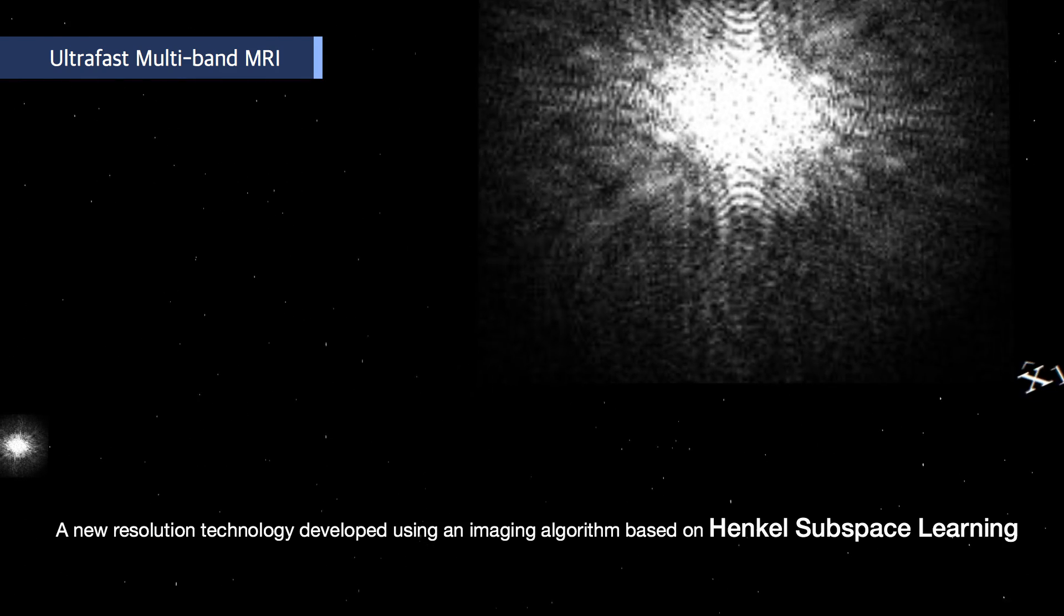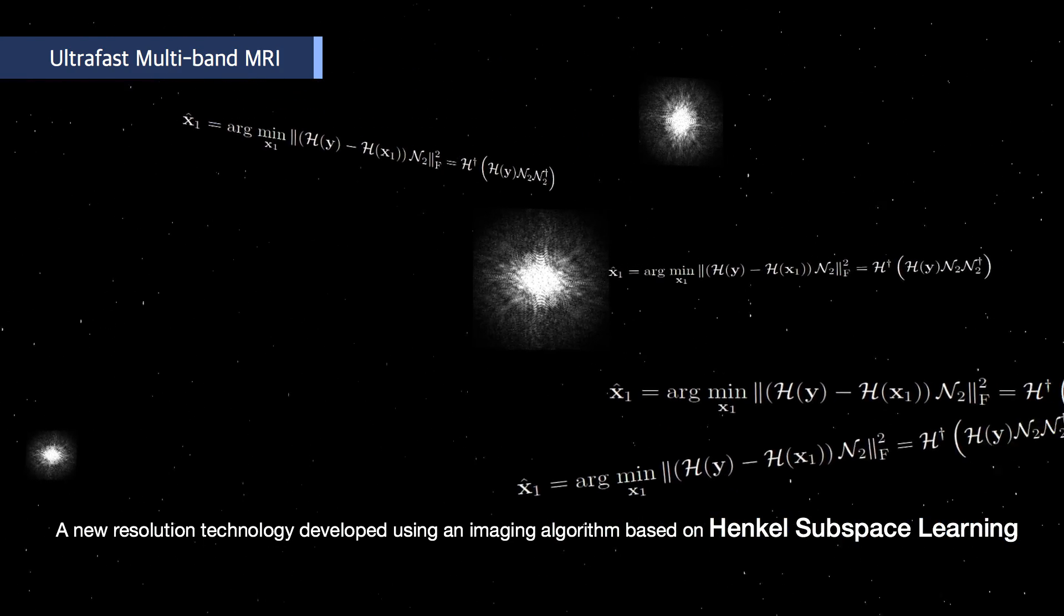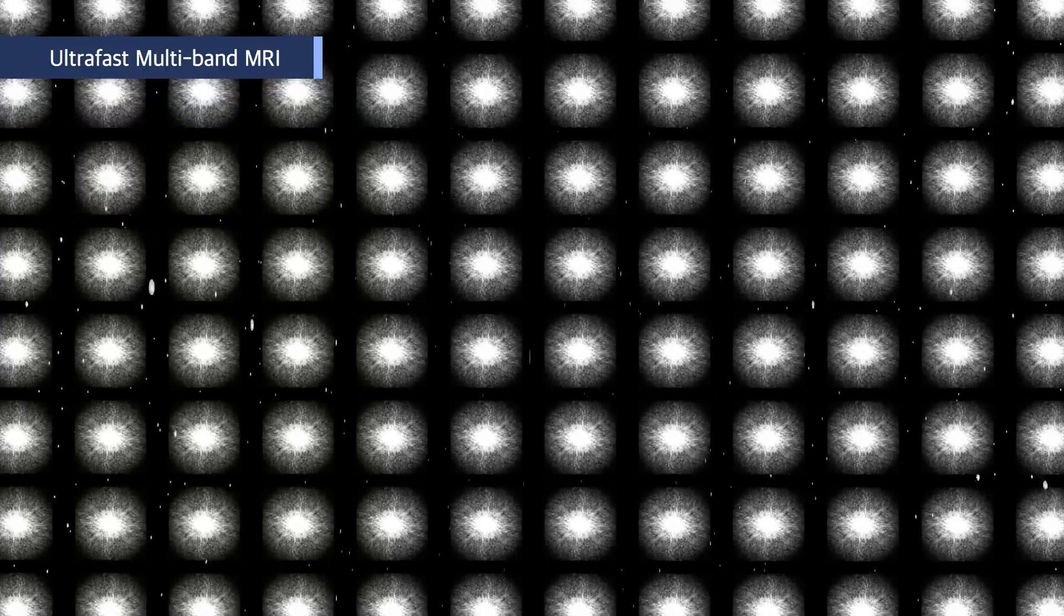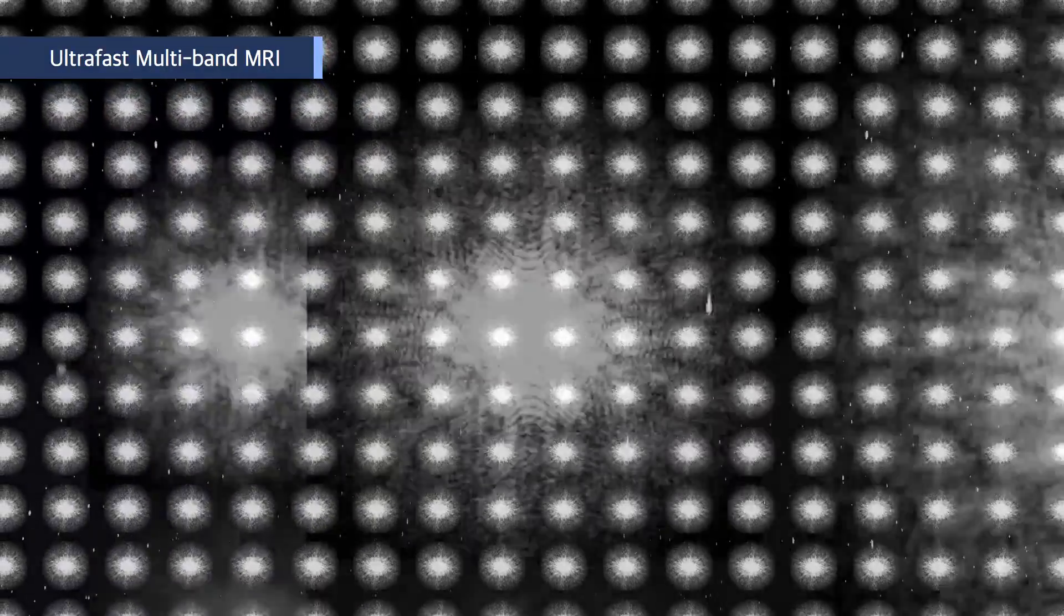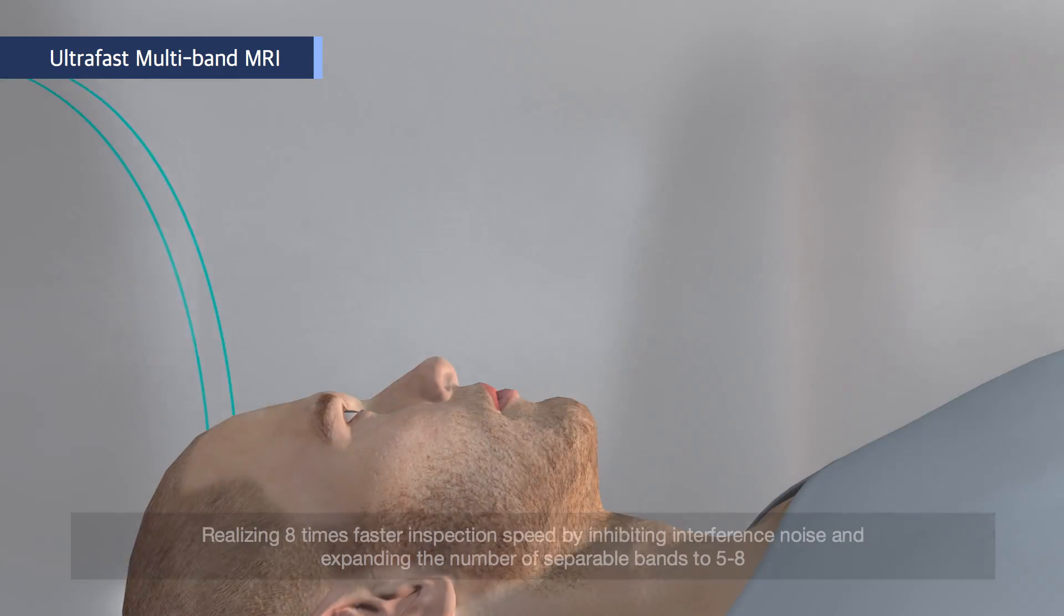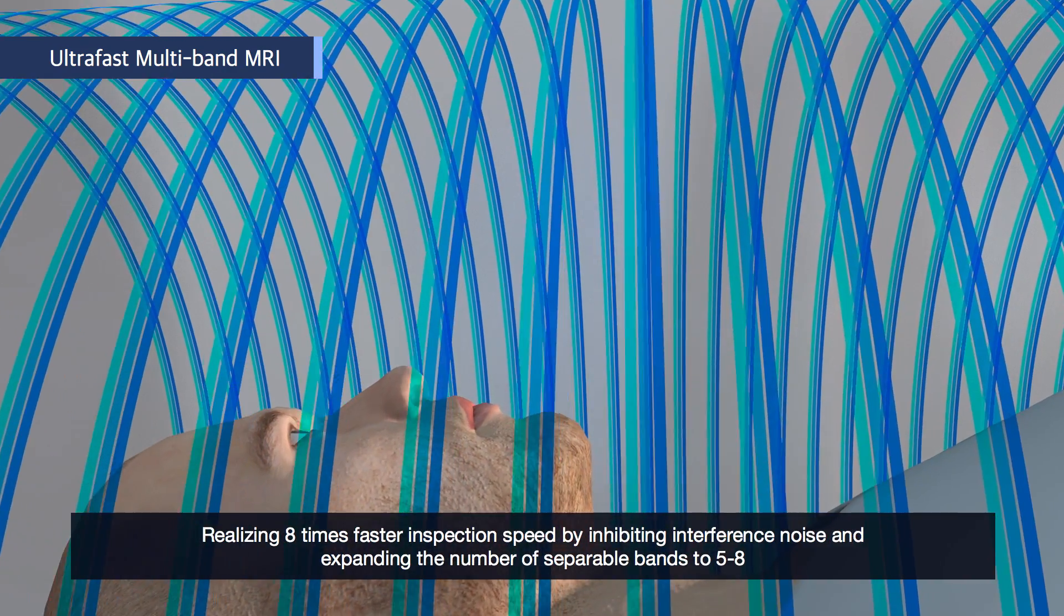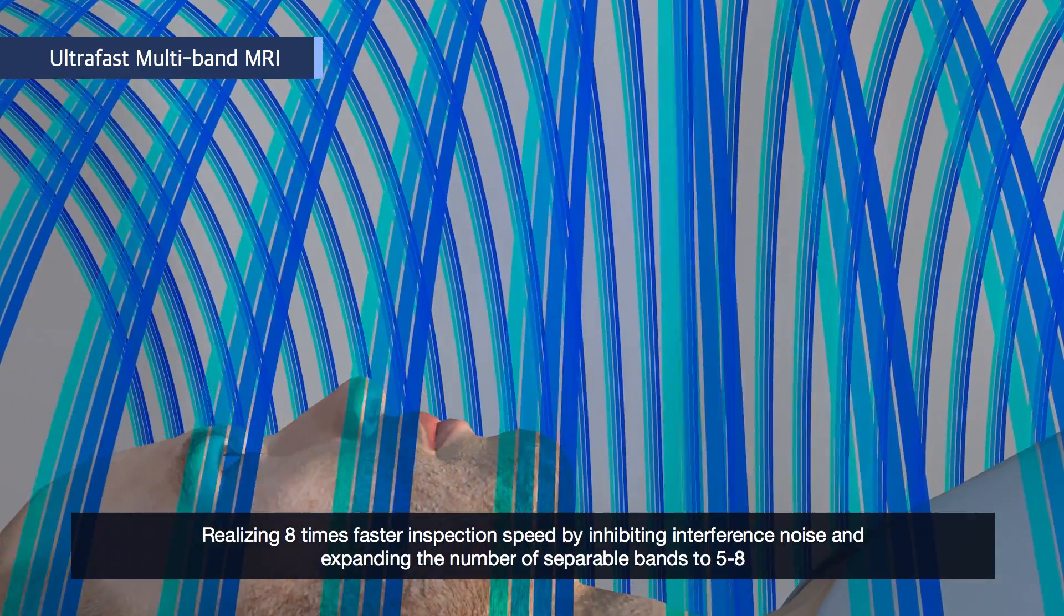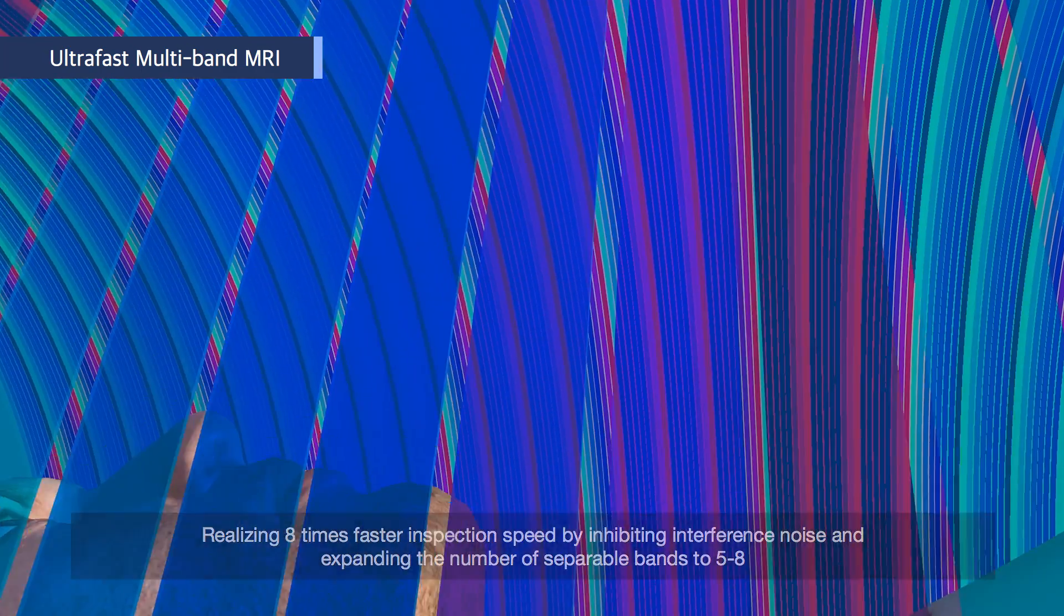The research team invented an imaging algorithm based on Henkel subspace learning to develop a new resolution technology by utilizing the null space of k-space containing multi-slice information. The technology perfectly separates overlapped slices and gets individual band k-space. This technology extremely inhibits interference noise and expands the maximum number of separable bands to 5-8, making it realize eight times faster inspection speed.